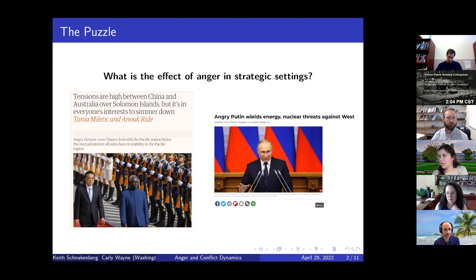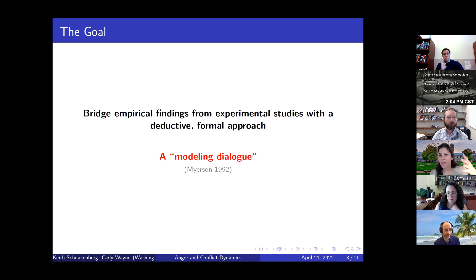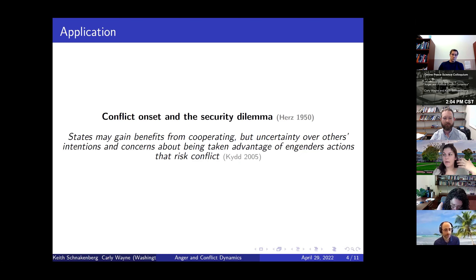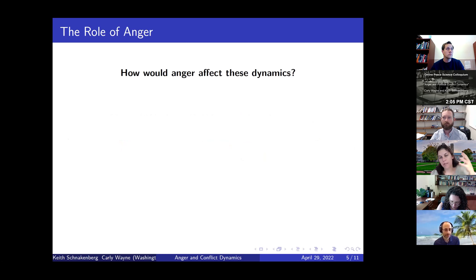These are the kinds of questions we're interested in exploring. We're trying to bridge what we know empirically from experimental studies of how emotion functions in political conflict with a more deductive, formal approach that takes the strategic interaction part of conflict really seriously. The application we're thinking about is conflict onset and the security dilemma—where states or actors might gain benefits from cooperating but are uncertain over others' intentions and concerned about being taken advantage of, which can engender actions that risk or make conflict more likely.